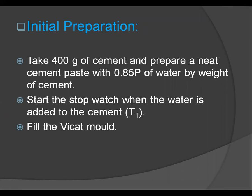Now let's see the initial preparation for both tests — initial setting time and final setting time. First, a consistency test must be done before starting the procedure to find out the water required to give the paste normal consistency, that is P. Then take 400 grams of cement and prepare a cement paste with 0.85P of water by weight of cement. The gauge time is kept between 3 to 5 minutes. Start the stopwatch at the instant when the water is added to the cement and record this time as T1. Fill the Vicat mould resting on a glass plate with the cement paste, fill it completely, and smooth off the surface level with the top of the mould. The cement block thus prepared is called the test block.